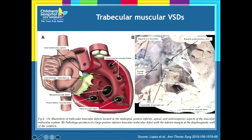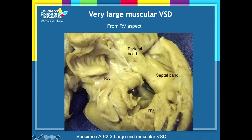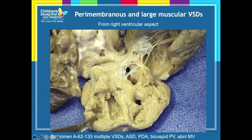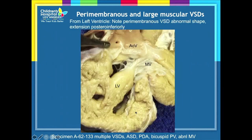Here are examples: anterior muscular VSDs, an apical muscular VSD, a mid-muscular VSD, and a posterior VSD — all remote from the conduction system, in the mass of the ventricular septum itself. A specimen shows a very large mid-muscular VSD from both the right and left ventricular sides. Another specimen shows multiple VSDs — a Swiss cheese VSD with one large defect extending into the inlet and membranous septum, a mid-muscular defect, and possibly additional defects more posteriorly.